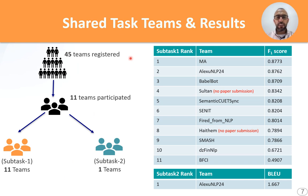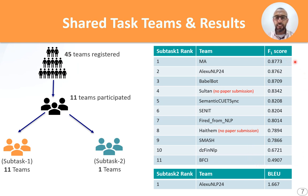45 teams registered for the shared task and requested the data, but only 11 teams participated in the final stages and submitted their results to the CodaLab platform. All 11 teams participated in subtask 1, but only one participated in subtask 2. The metric used in subtask 1 is F1 score, ranging from approximately 50% to 88%. The metric for subtask 2 is BLEU, and the only participating team achieved a score of 1.667.